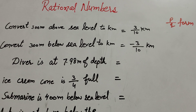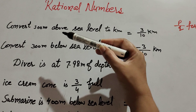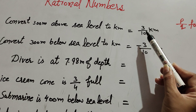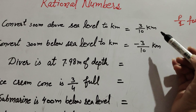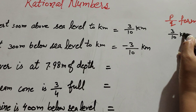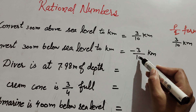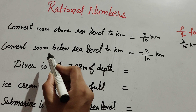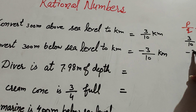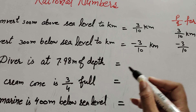Let's take some more examples. We convert 300 meters above sea level to kilometer — it equals 3 over 10 kilometer, and it is in p over q form. We convert 300 meters below sea level to kilometer — it equals minus 3 over 10, and minus 3 over 10 is also in p over q form.